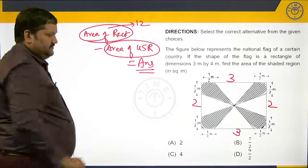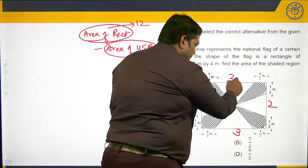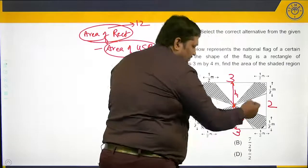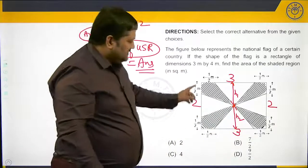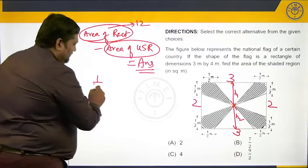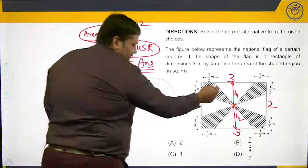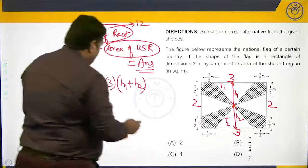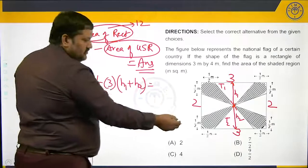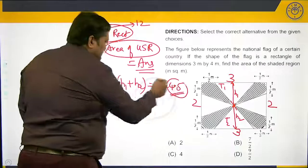Let us focus on the area of the unshaded region. If I look at these 2 triangles, I can take the base as 3 for both. This triangle will have height h1 and this triangle will have height h2. We know h1 plus h2 is equal to 3. So the combined area of triangle 1 and triangle 2 is half base into height: (3/2) into (h1 + h2) = (3/2) into 3 = 9/2, which is 4.5.